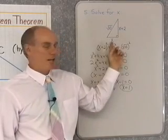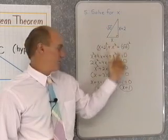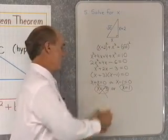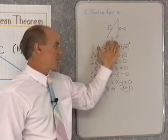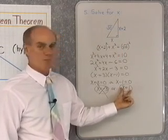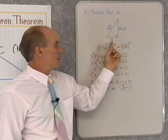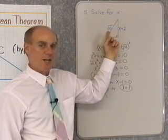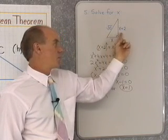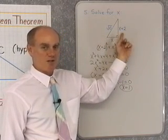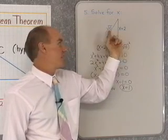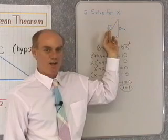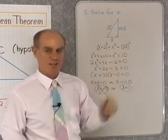Does that make sense? 1 squared plus 3 squared: 1 plus 9 is 10. And sure enough, the square of the longest side — √10 squared — equals the sum of the squares of the other two sides. This confirms our answer.